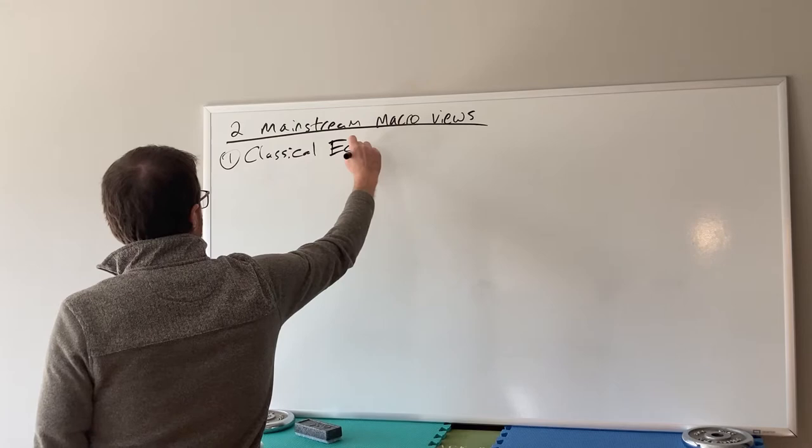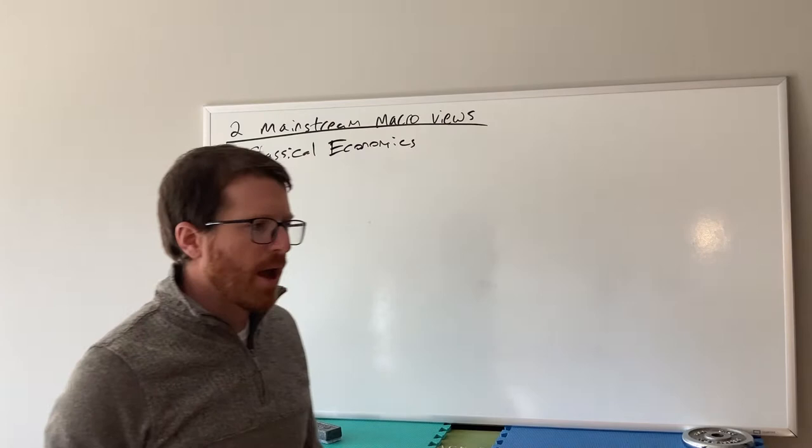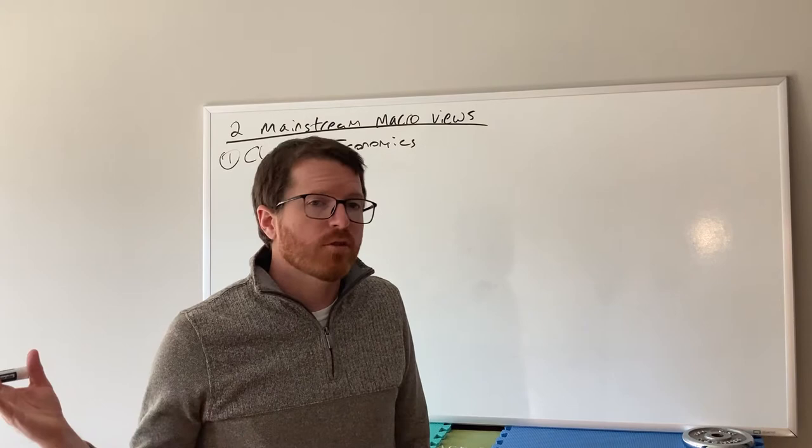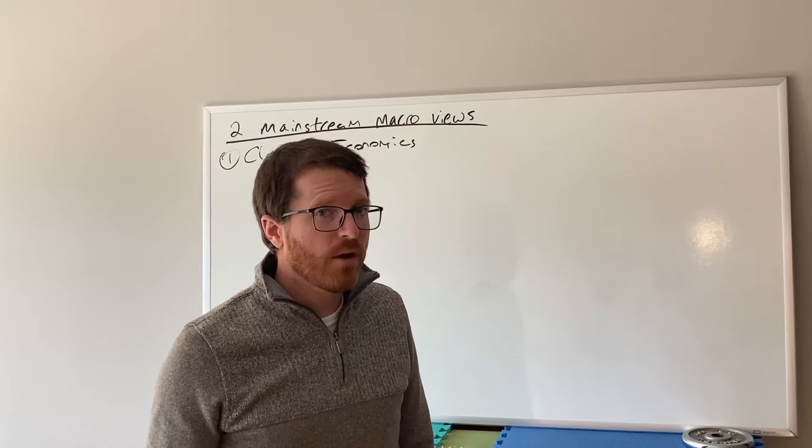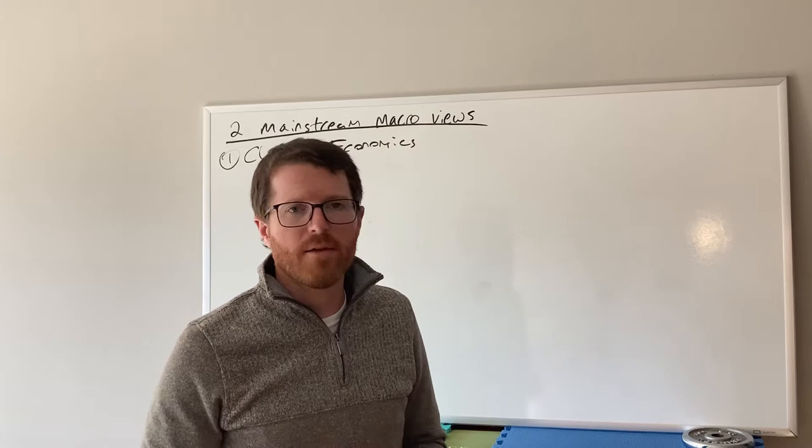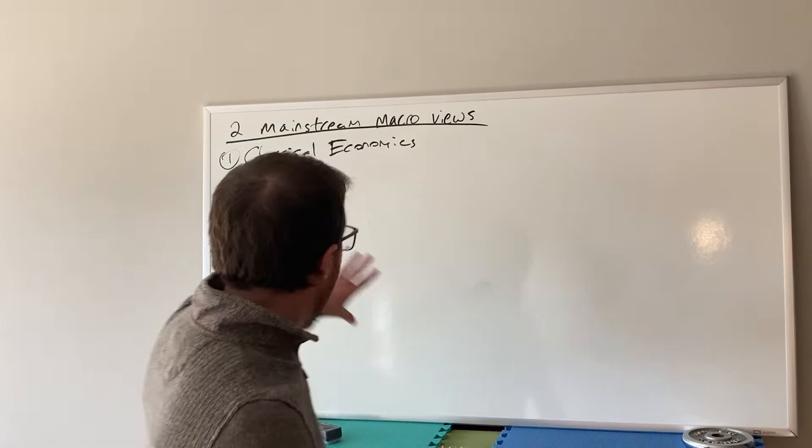The overriding theme in macroeconomics is that a lot of the basic ideas in macro — a lot of the primary things we would care about, like what should the government do during a recession — there's no correct answer to that. There are schools of thought that tend to have different validity based on the different structures in that society, the way the government is set up, the way the economy is set up. So we'll start with one approach, which is classical economics.